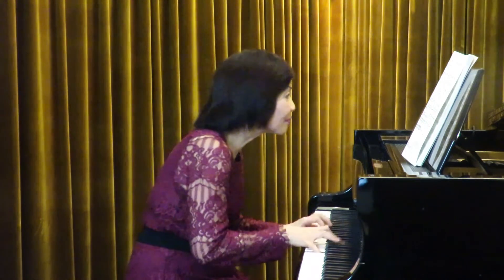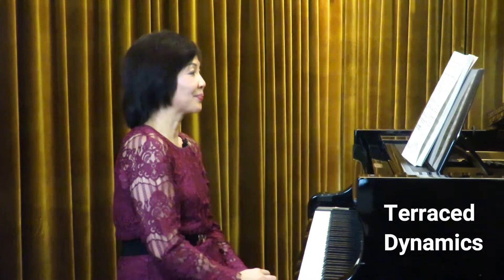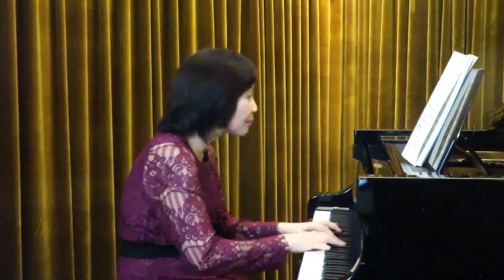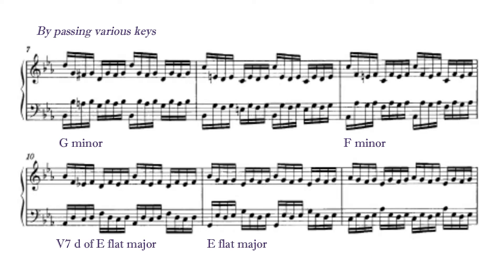There are certain distinctive features in this Prelude. Firstly, we see a number of sequences for which we can use terraced dynamics. Let's look at bars 5 and 6, which are sequenced in bars 7, 8, 9 and 10 in different keys — from C minor, to F minor, approaching G minor, then F minor, the dominant of E-flat major, and then modulating to E-flat major.